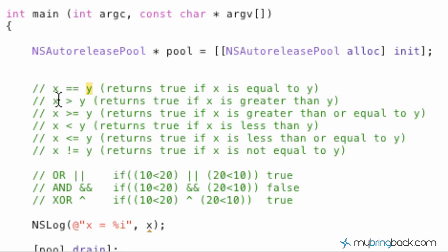Alright, moving forward, we're going to speed through these because they're kind of self-explanatory. x is greater than y, x is greater than or equal to y, x is less than y, x is less than or equal to y.